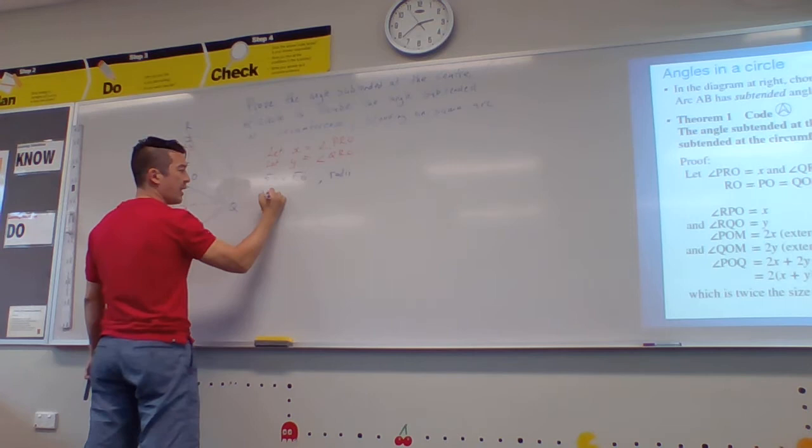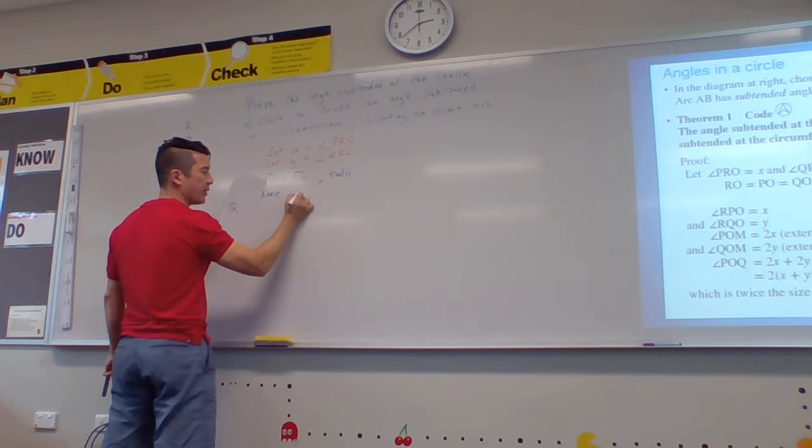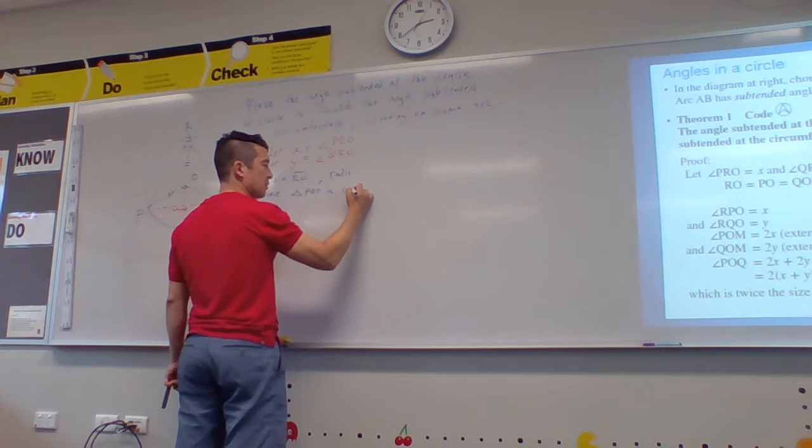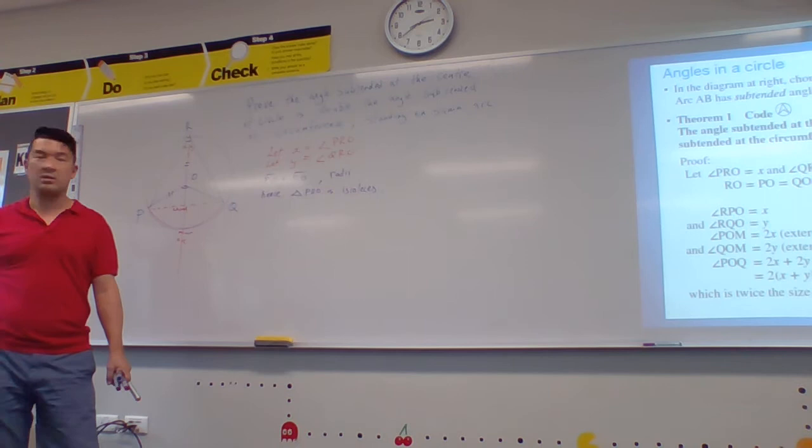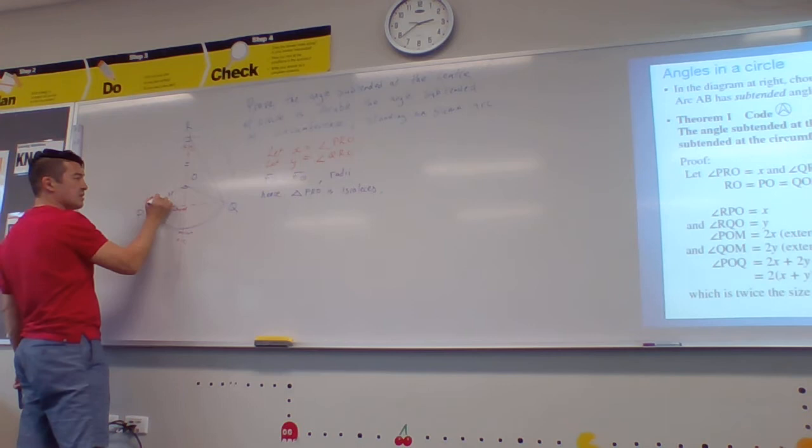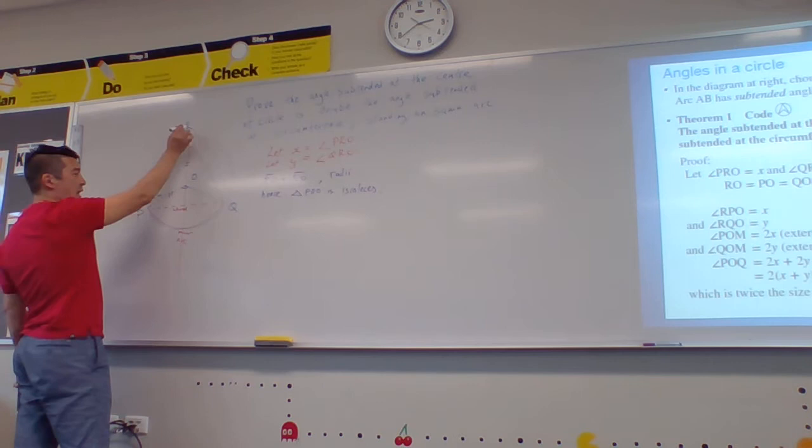So if that one's the same as that line, I can say hence the triangle PRO is isosceles. Do you agree?